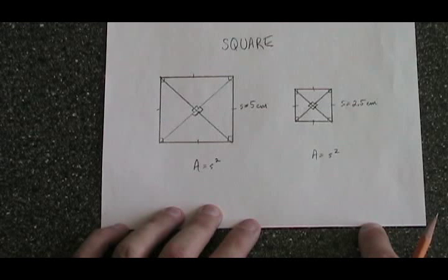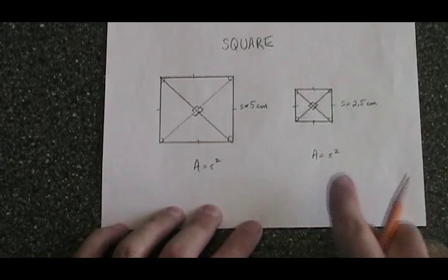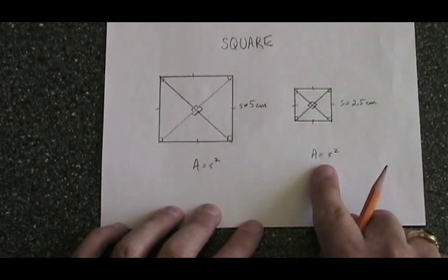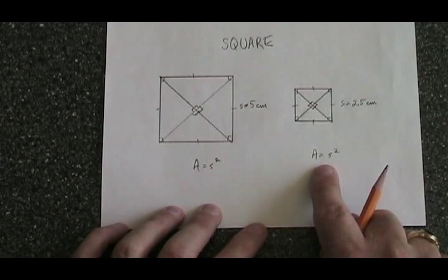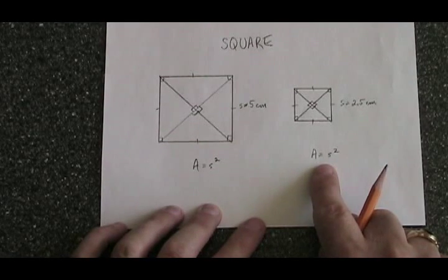The formula to calculate the area of a square is simple. It is A equals s squared, where s is the length of a side.